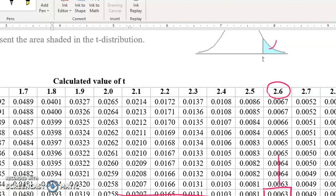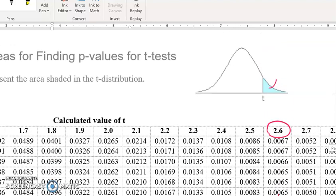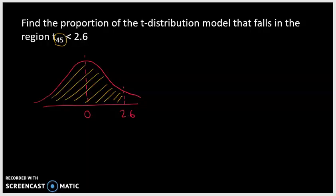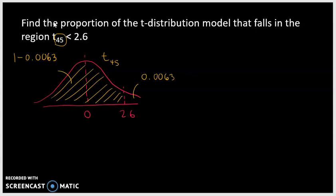But obviously it can't be the same answer. You have to understand this table gives you the value of the area that falls above — it falls in the tails. We know that 0.0063 falls greater than 2.6. The area under the curve is 1, so what falls less than 2.6 is 1 minus 0.0063, which equals 0.9937, or 99.37%.